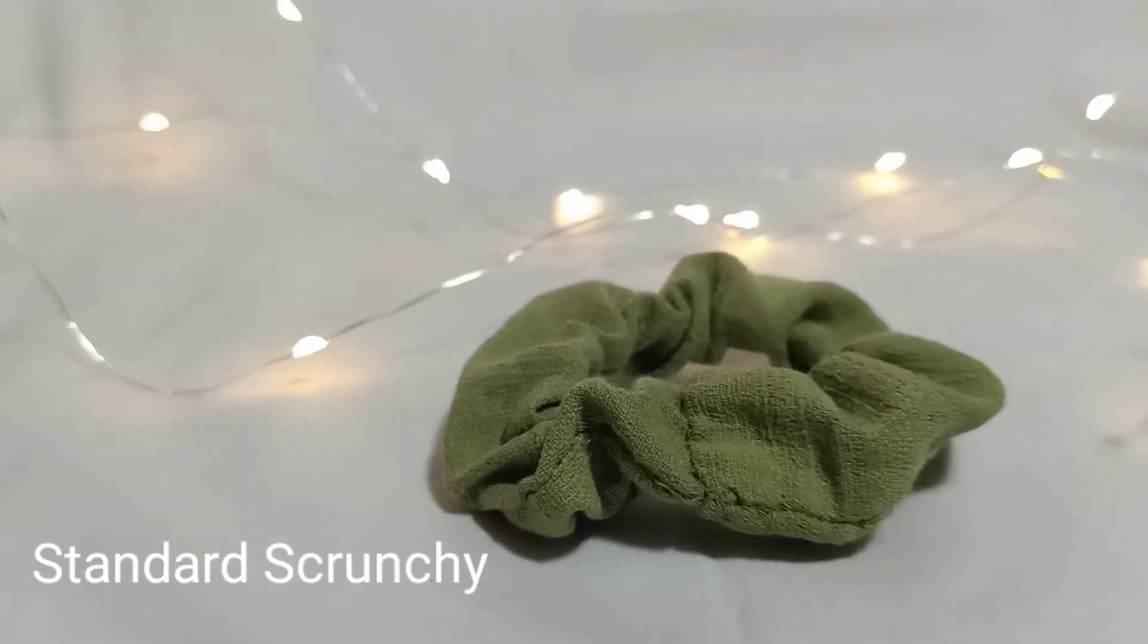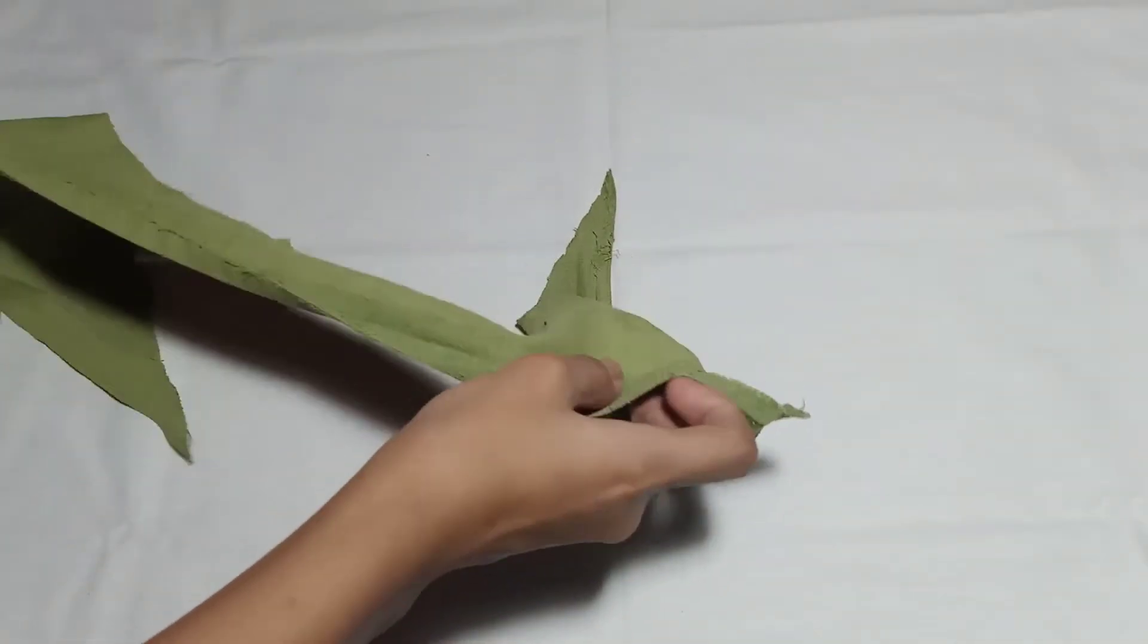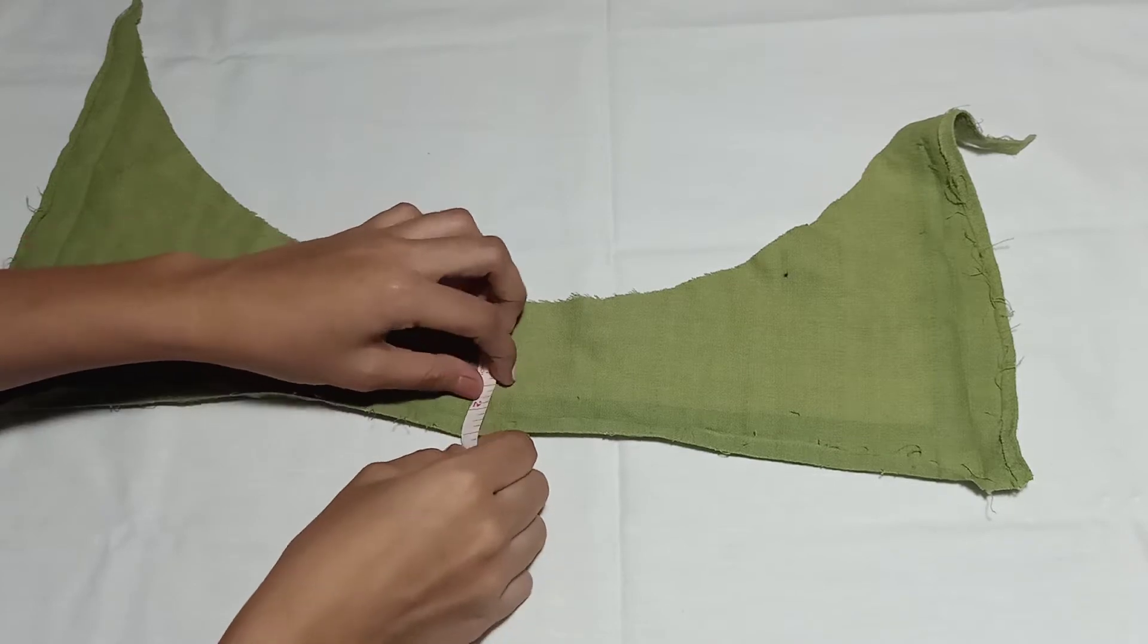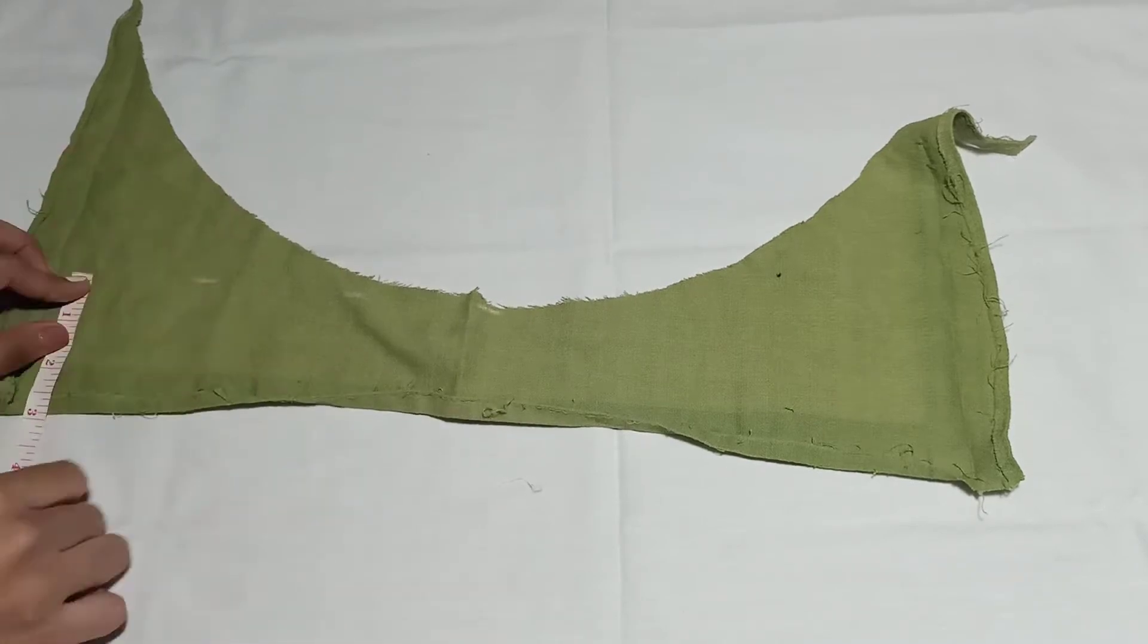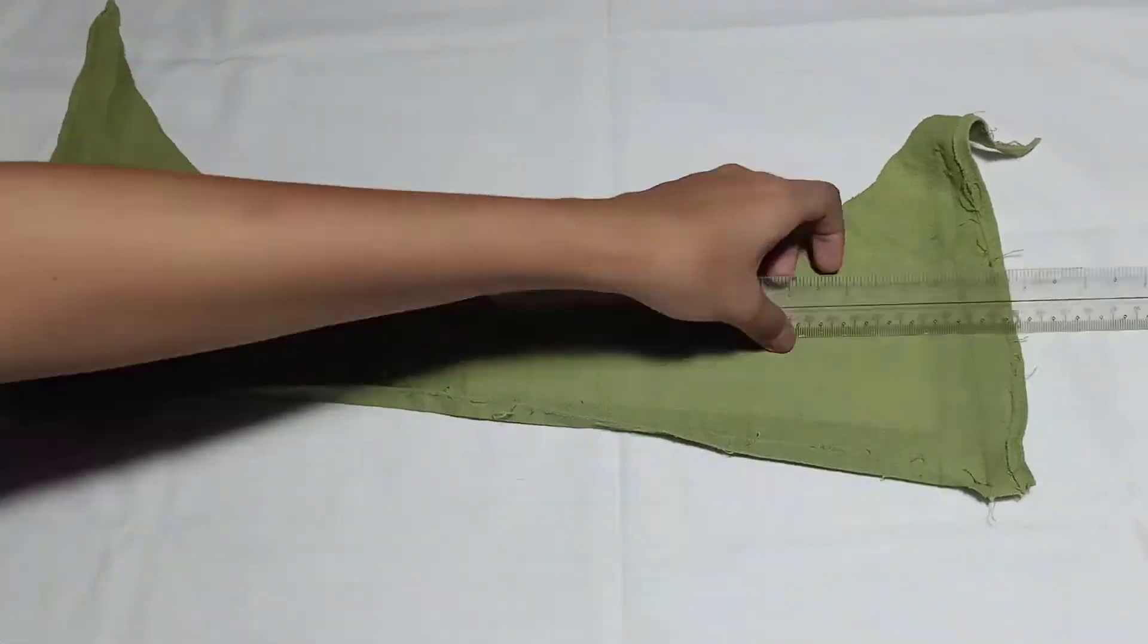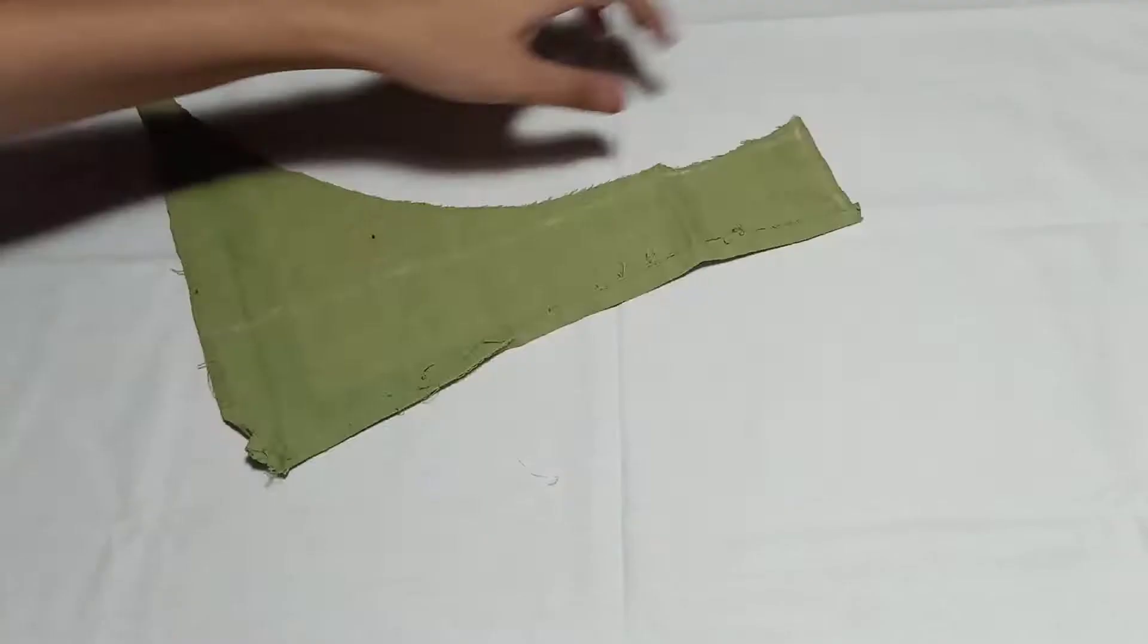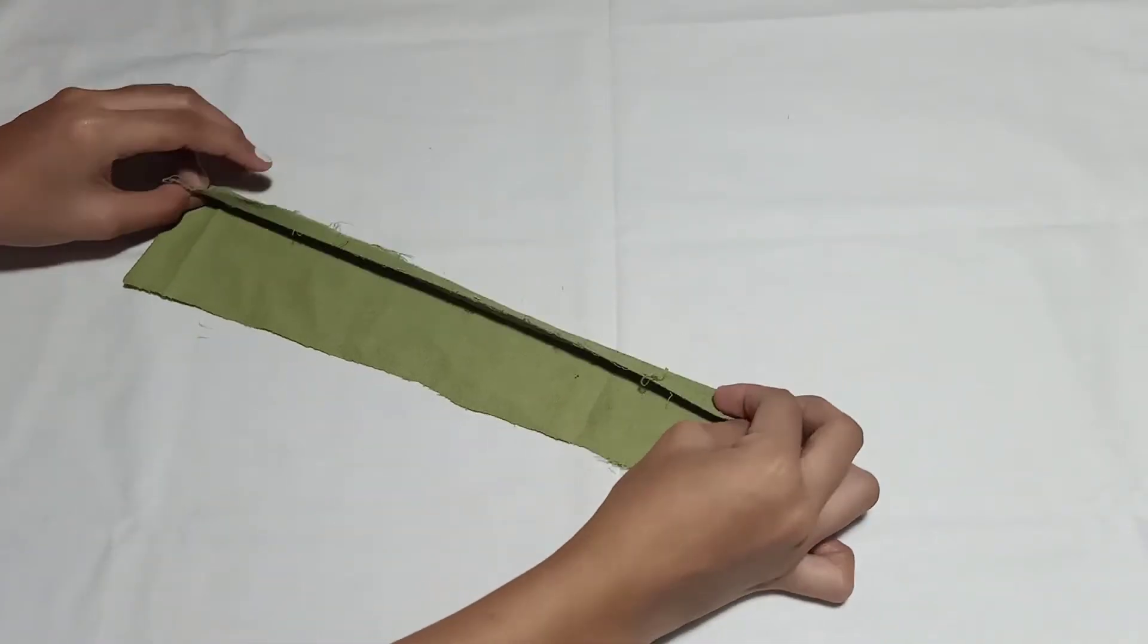For the standard scrunchie, I used leftover fabric. I measured two and a half inches, then connected all the marks. I also measured 12 inches, but you can make it longer. The length depends on your preference.